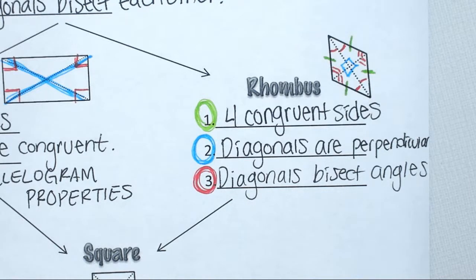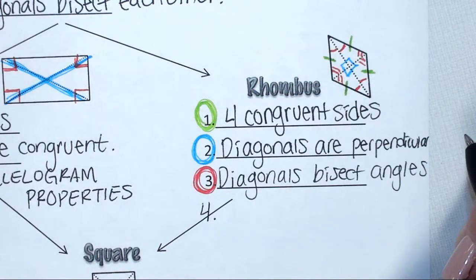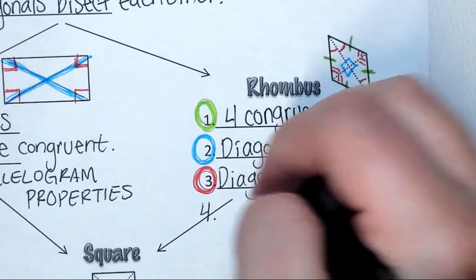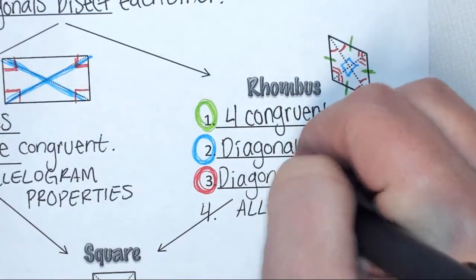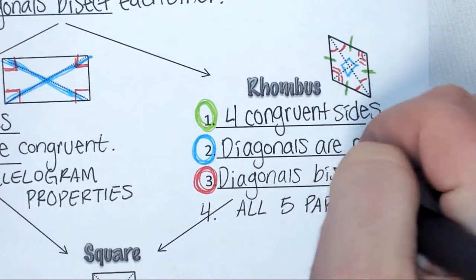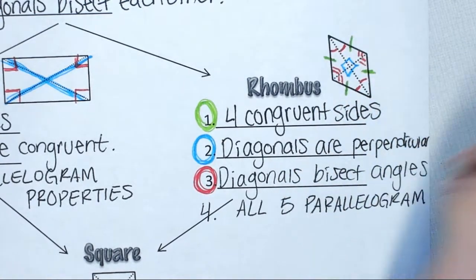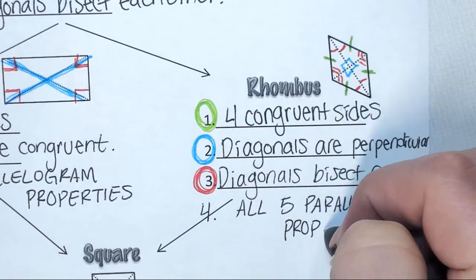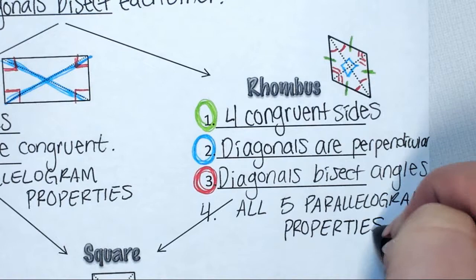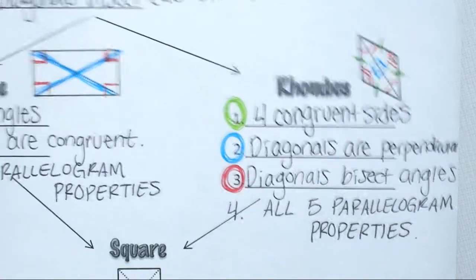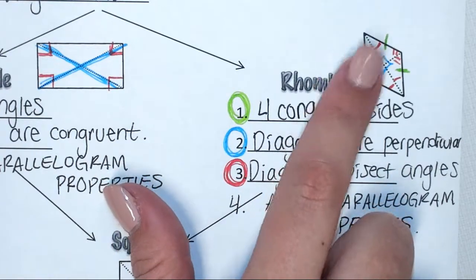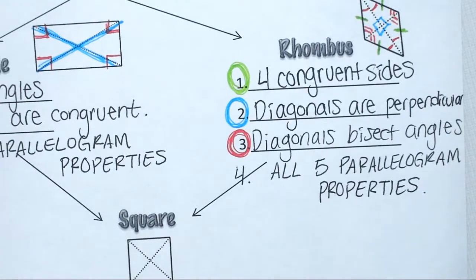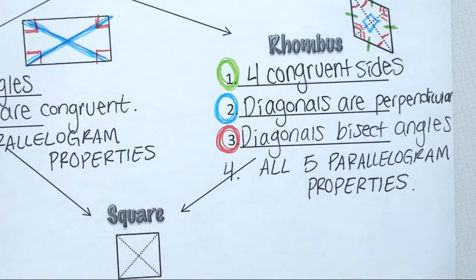Any questions about what any of those properties mean? True or false: a rhombus is a parallelogram. True. So I can add in my fourth property: all five parallelogram properties. True or false: a rhombus is a rectangle. That's false, because on a rectangle you have four right angles, but you don't have that happening here. The right angles are in different places. But both of them are considered to be parallelograms.